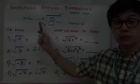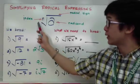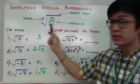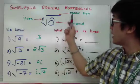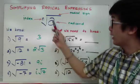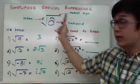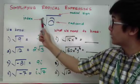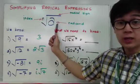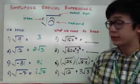The number on top of the radical symbol is your index, and the number inside the radical sign is your radicand. This is your radical symbol, and these parts are what make a radical expression.